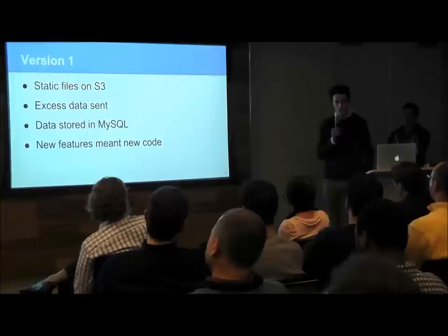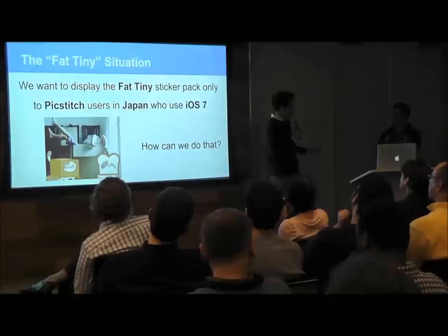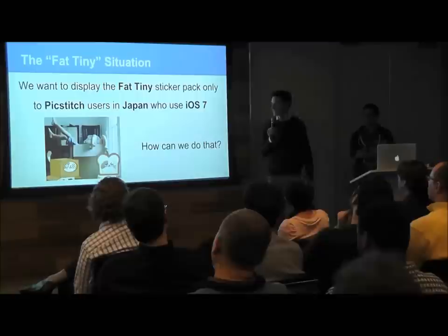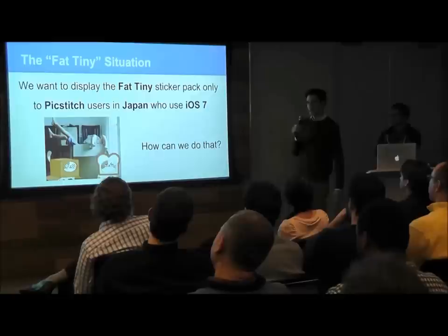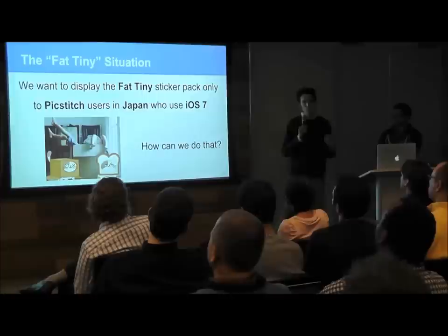Version one launched in February of this year. It worked well and solved the initial Fat Tiny problem. But then we had a second Fat Tiny problem we wanted to address. We wanted to display the same Fat Tiny sticker pack but target only users of the app PicStitch — one of our large partners.